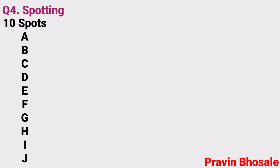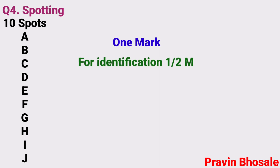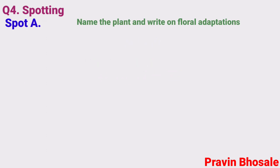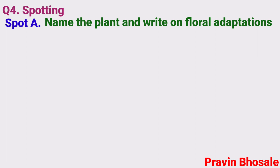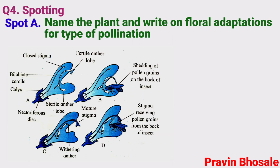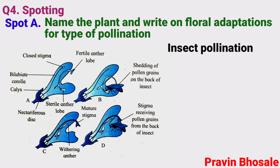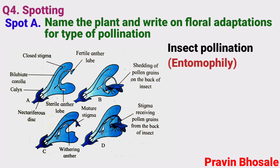Question number four is spotting. There are ten spots in total, and each spot carries one mark — half mark for identification and half mark for comment. Spot A: name the plant and write on floral adaptation for type of pollination. So if a salvia flower or photocopy is kept, you will write insect pollination — pollination done by insects, entomophily — and the adaptations in that flower.